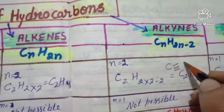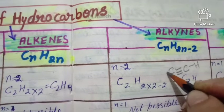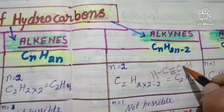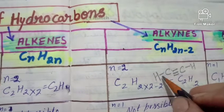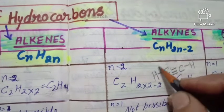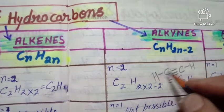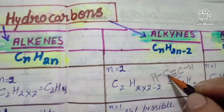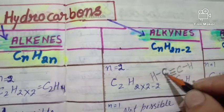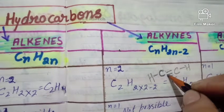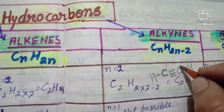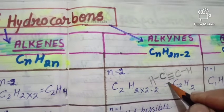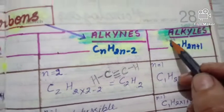C2H2 can also be represented as a structural formula: H–C≡C–H, where a triple bond connects the two carbon atoms. Each carbon is bonded with four bonds total, and each hydrogen is bonded with one bond. Counting the bonds around each carbon — one, two, three, four — confirms the formula is correct, as carbon completes its octet with eight electrons around it.